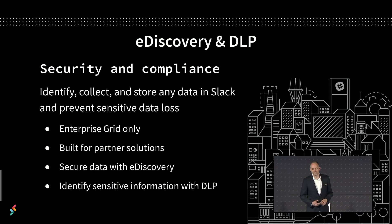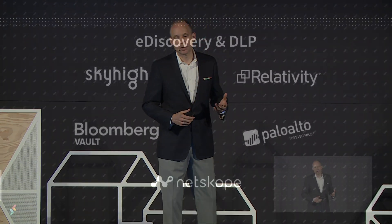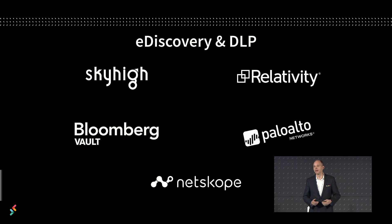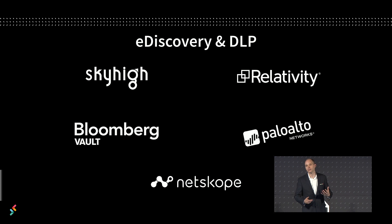DLP stands for data loss prevention. This is similar, but it's actually a technique for identifying sensitive information such as employee or customer data. A DLP solution will let you specify a query so that you can proactively remove or redact that information so that it's not able to be accessed or compromised later on. For example, you might set up a query that looks for a string of letters that looks like a social security number and then automatically remove or redact that information. Our eDiscovery and DLP APIs are built primarily to work directly with eDiscovery and DLP partner applications. If you work in a regulated or government agency, you probably recognize some of these names. If you're interested in building your own discovery or DLP solution, we can actually help you out with that — we just need to enable some things on the back end for custom applications.